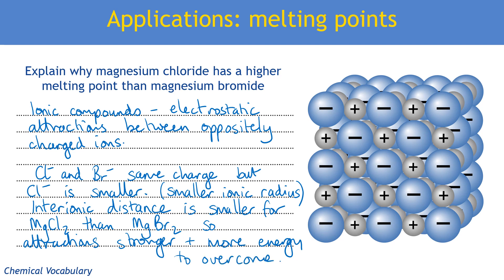Interionic simply means between ions. You could write out that the distance between Mg²⁺ and Cl⁻ is smaller than the distance between Mg²⁺ and Br⁻, but 'interionic distance' is a more concise term. Also, when writing the formulas for compounds, always use the correct formula — don't write MgCl instead of MgCl₂, as this will cost you marks.